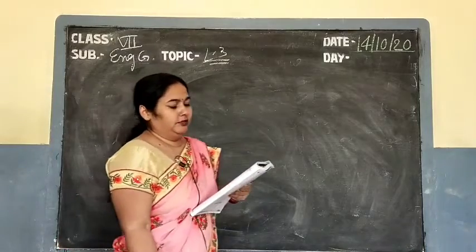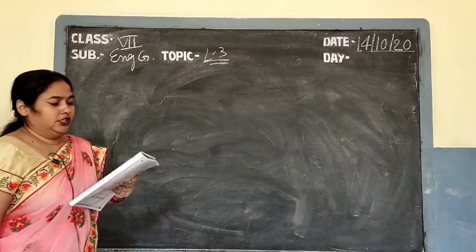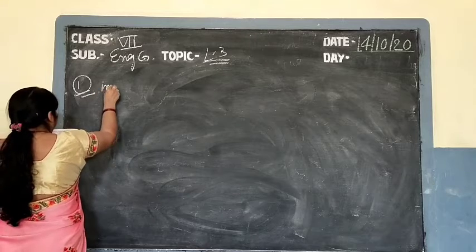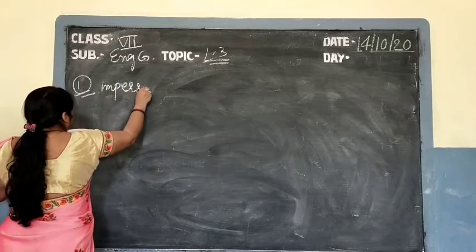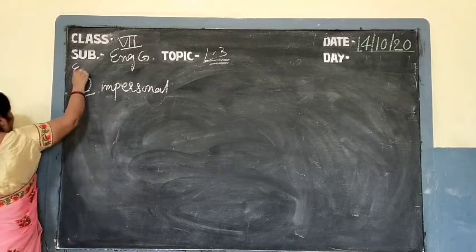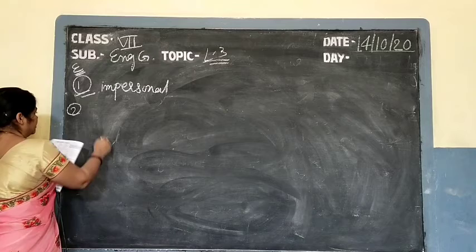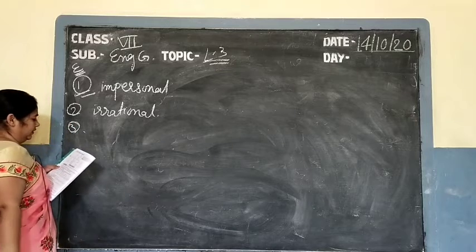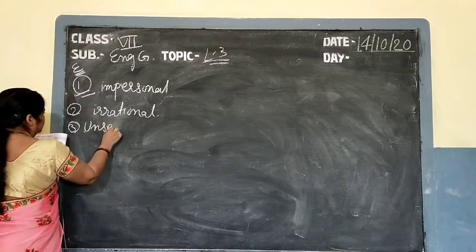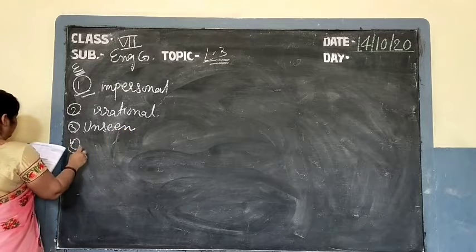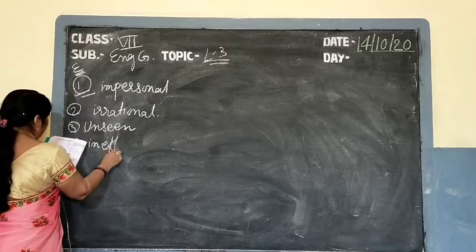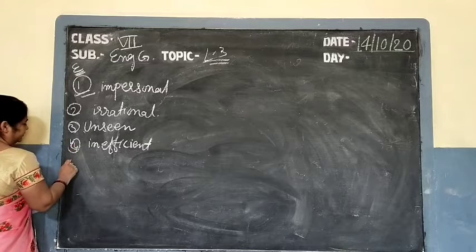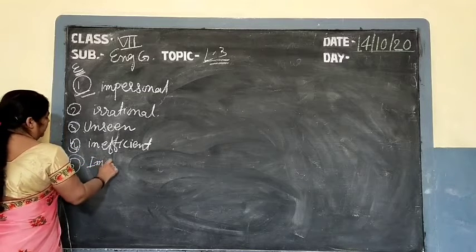Exercise e: form the opposite of the following words by adding the prefixes in-, dis-, ir-, and un-. First: 'personal' — what will it become? Impersonal. I'll write the answers directly. Second: 'rational' — irrational. Third: 'seen' — unseen. Fourth: 'efficient' — insufficient. Fifth: 'proper' — improper.